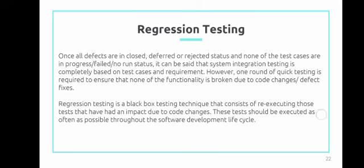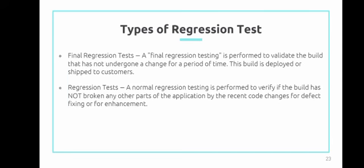Mayroong dalawang types of regression test. First is final regression test. Final regression testing is performed to validate the build that has not undergone a change for a period of time. This build is deployed or shipped to the customer. Ibig sabihin ng final regression test is yung parang pinaka-last, last test na — titignan nila kung yung bug na yun ay uulit pa kapag tumagal na yung system, at muli nilang ito ay ite-test bago i-release ang isang system.